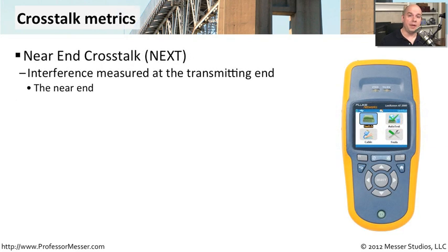There are a number of different measurements for crosstalk. One very common one is called near-end crosstalk, or NEXT. This is the interference you can measure when you plug into a transmission line at the near end — where you first put the signal on the wire. The signal is usually strongest right there, so near-end crosstalk gives a good idea of how much crosstalk you'll have all the way through the line.